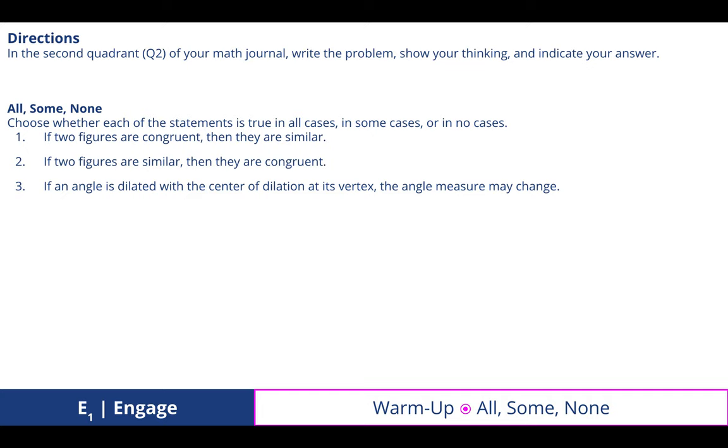Number two: if two figures are similar, then they are congruent. And that is sometimes true, and specifically in only one case, when you multiply by a scale factor of 1, whether it's negative or positive.